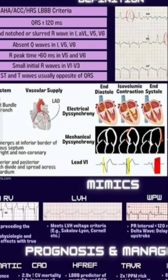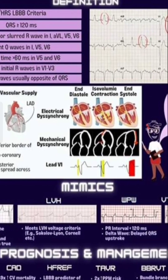In patients with EF less than 35%, QRS more than 150 milliseconds, and LBBB, cardiac resynchronization therapy (CRT) leads to a decrease in mortality and hospitalization. In TAVR procedures, LBBB is associated with a 2 times increased risk of PPM implantation, with increased risk associated with self-expanding valves and lower implant depth. Patients should be monitored for progression to AV block.